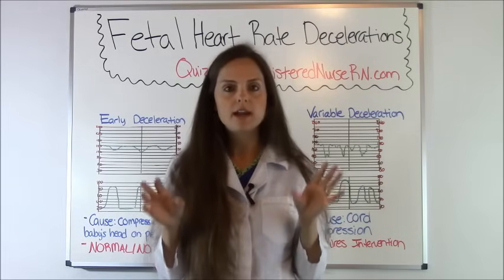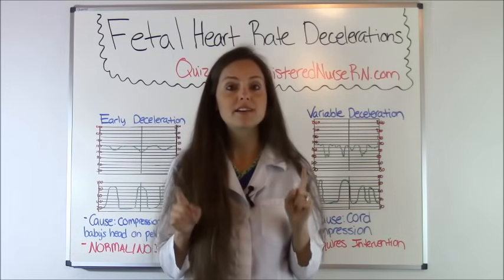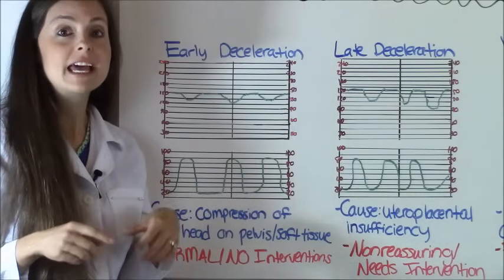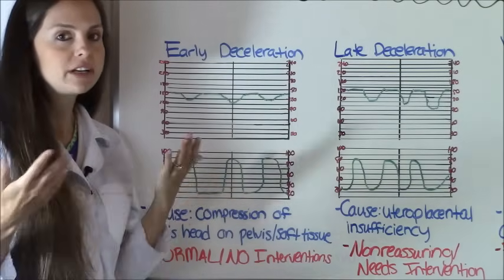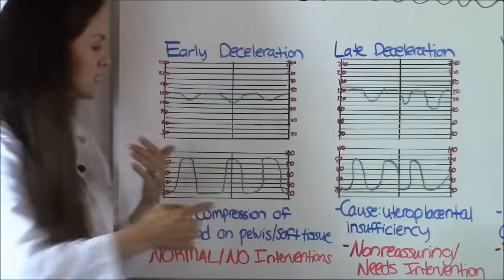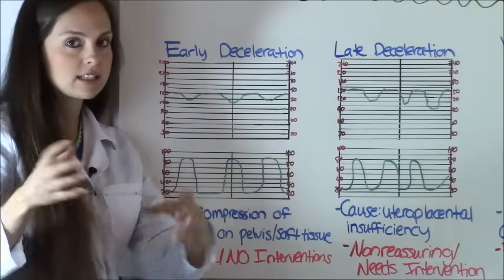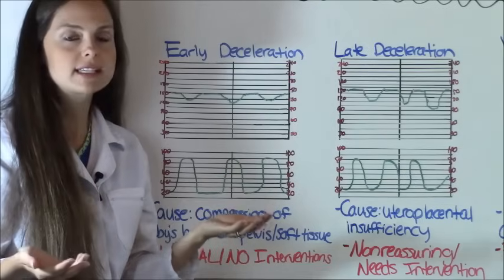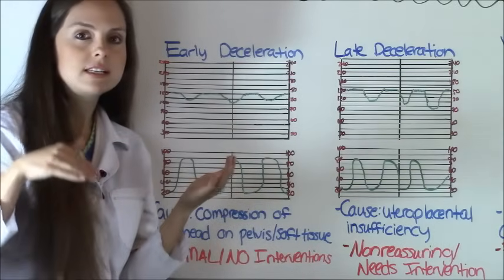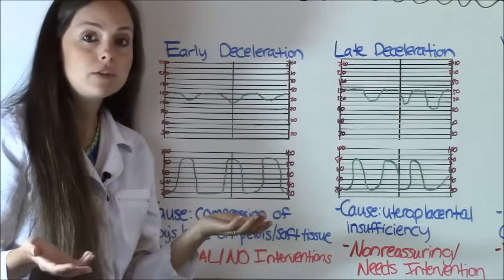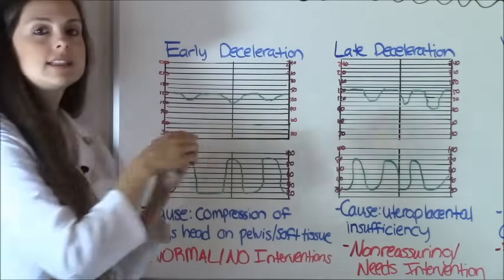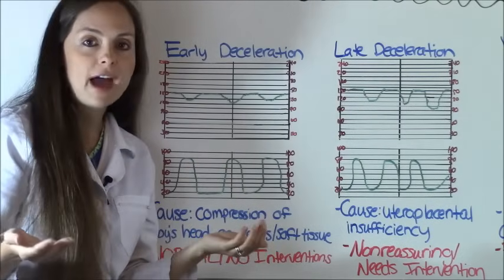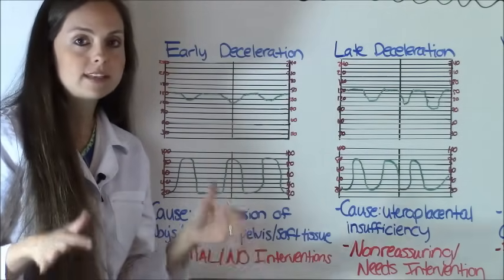Now let's go over each type individually with the highlights you need for NCLEX and maternity class. Early deceleration is the only normal one out of the three — no interventions are required, and you'd expect to see this when a woman is in labor. The uterus squeezes the baby, compressing it against the pelvis or soft tissue like the cervix, causing the fetal heart rate to dip just a little bit. Make sure it doesn't dip below 120. It mirrors mom's contraction and returns to baseline — completely normal.